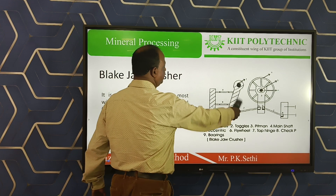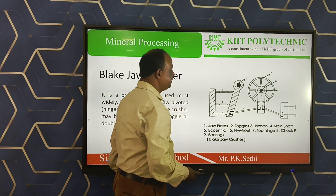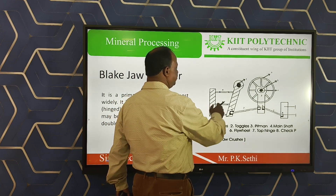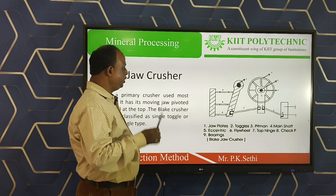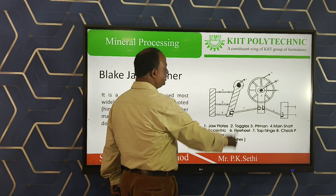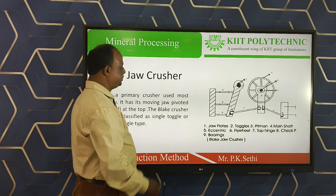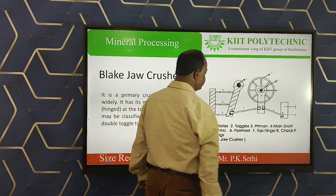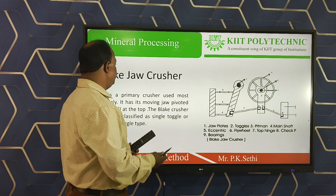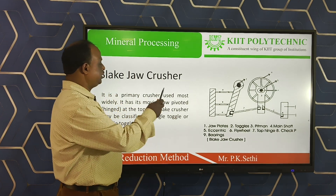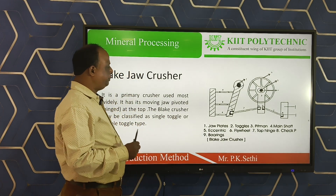This is the line diagram of the Blake type jaw crusher. There are two jaws — one is fixed and another is movable. The fixed jaw is attached to the main frame so that it cannot be moved. The movable jaw is attached to the eccentric, which is used to reduce the size of the minerals by compressive forces. This is the flywheel, there are two toggles, and this is the pitman. In the Blake type jaw crusher, the movable jaw is pivoted at the top, so that we get a fixed size feed material and a variable size product.